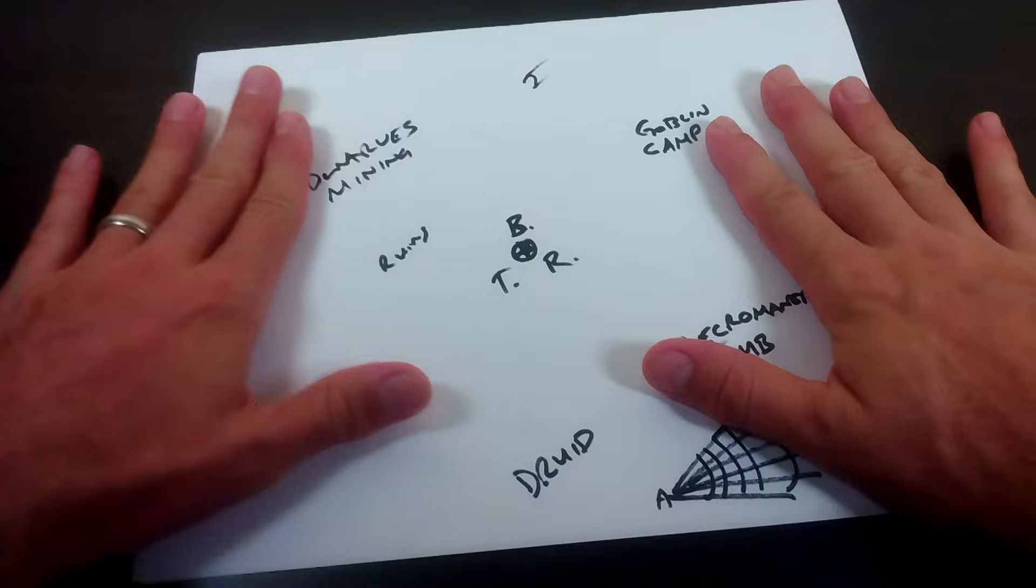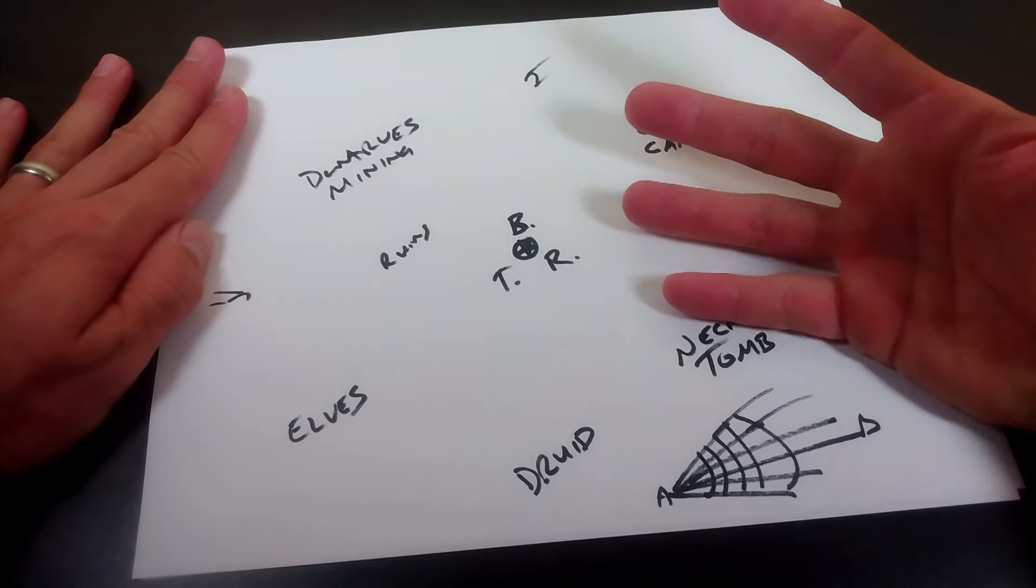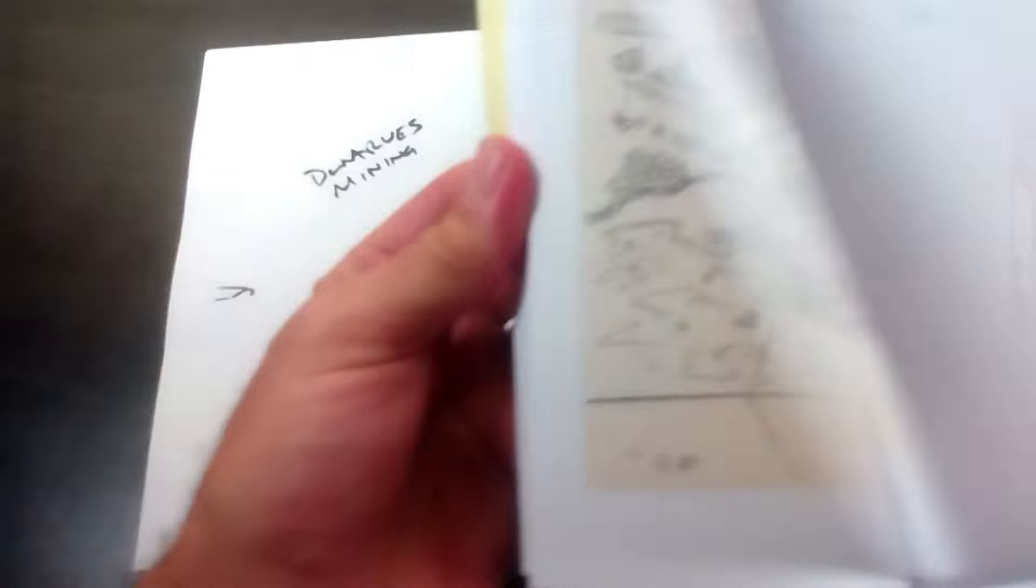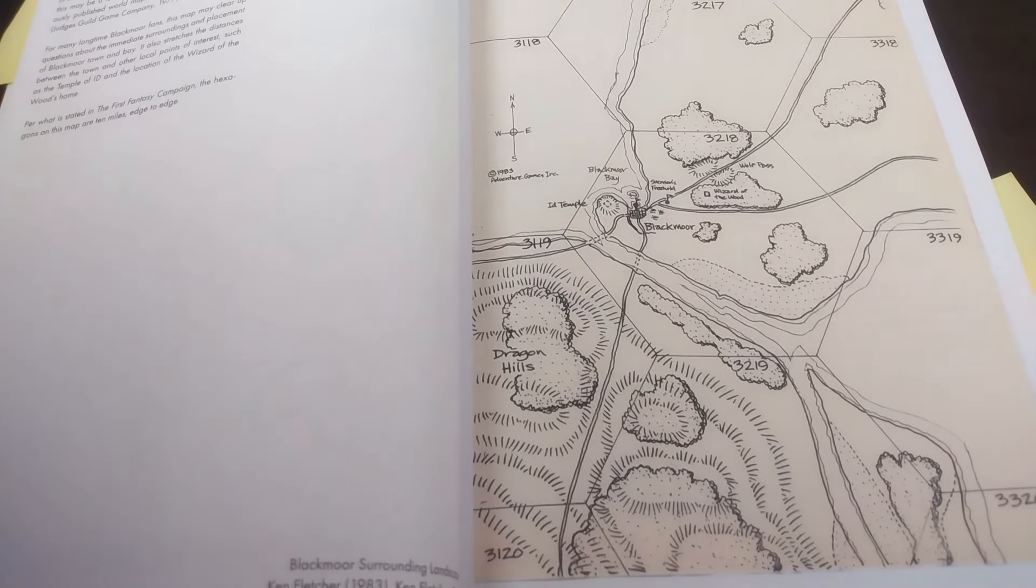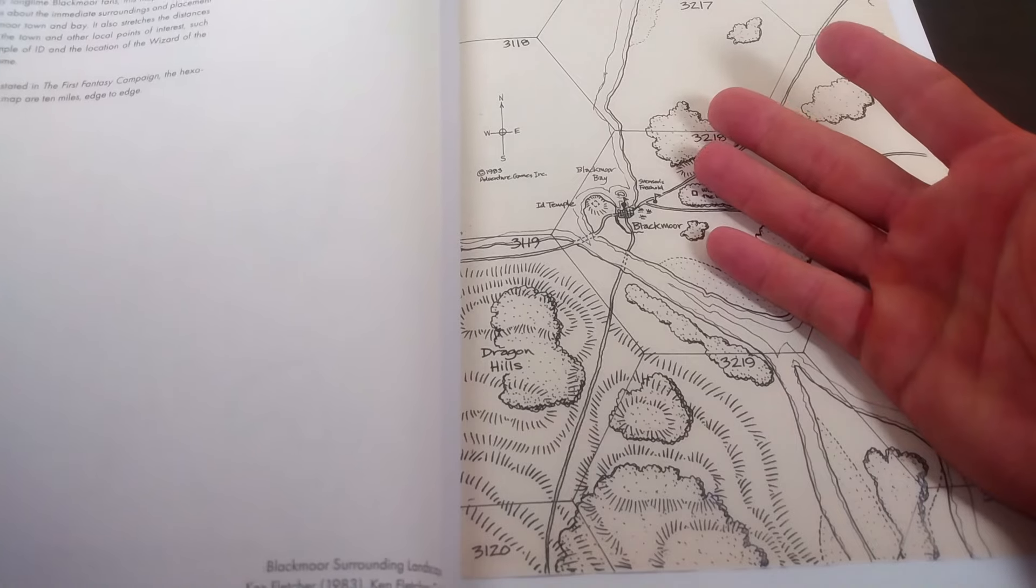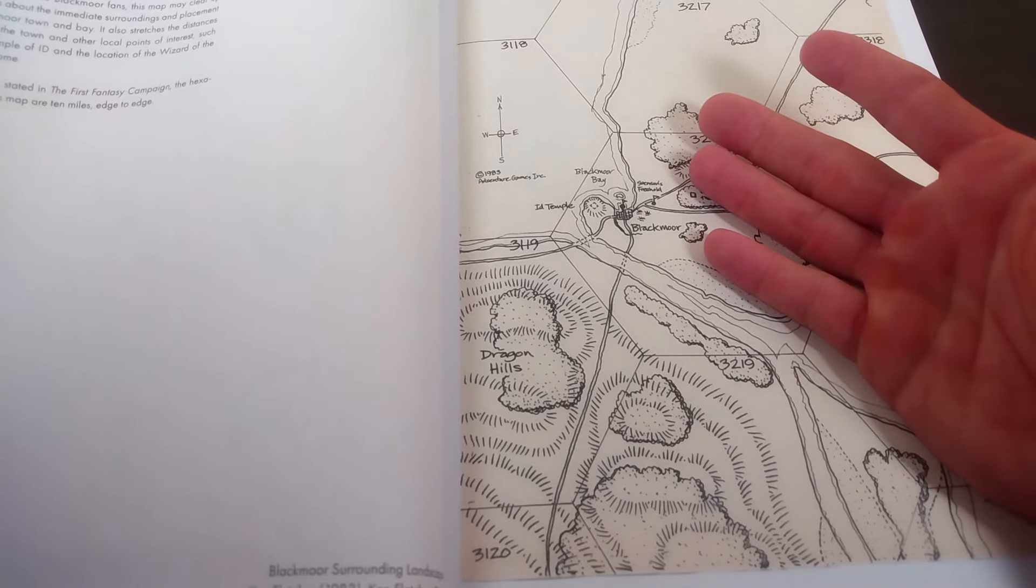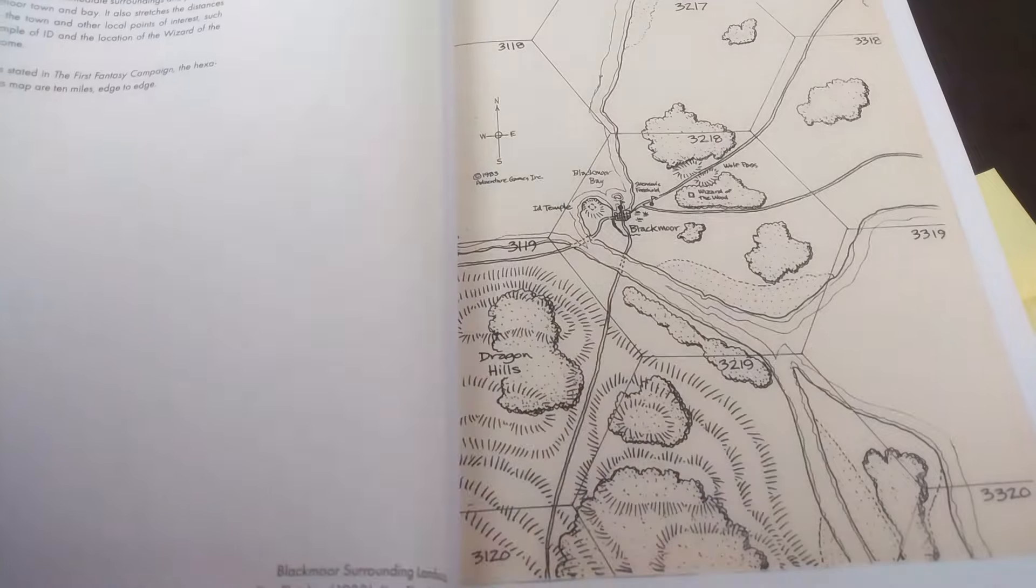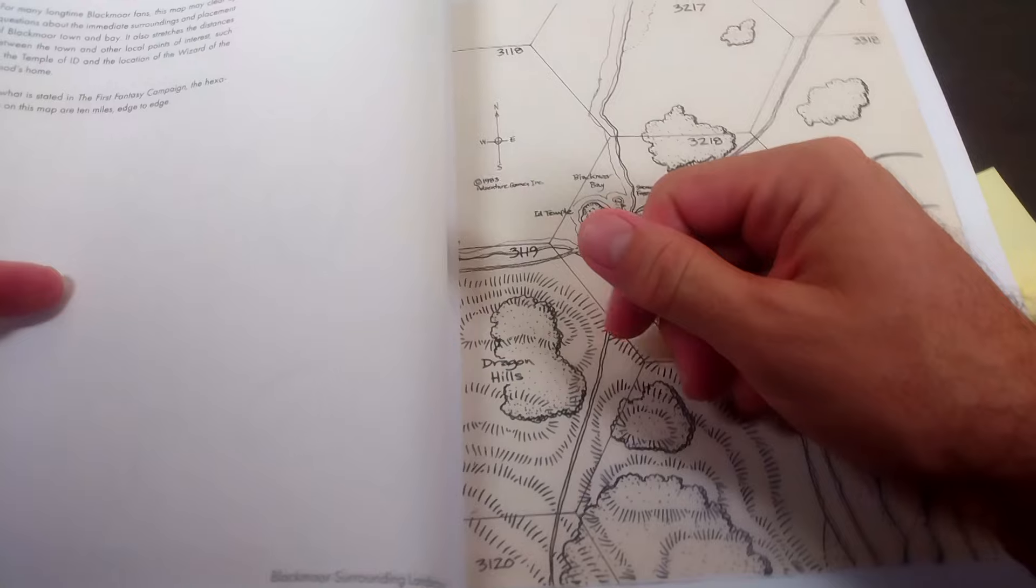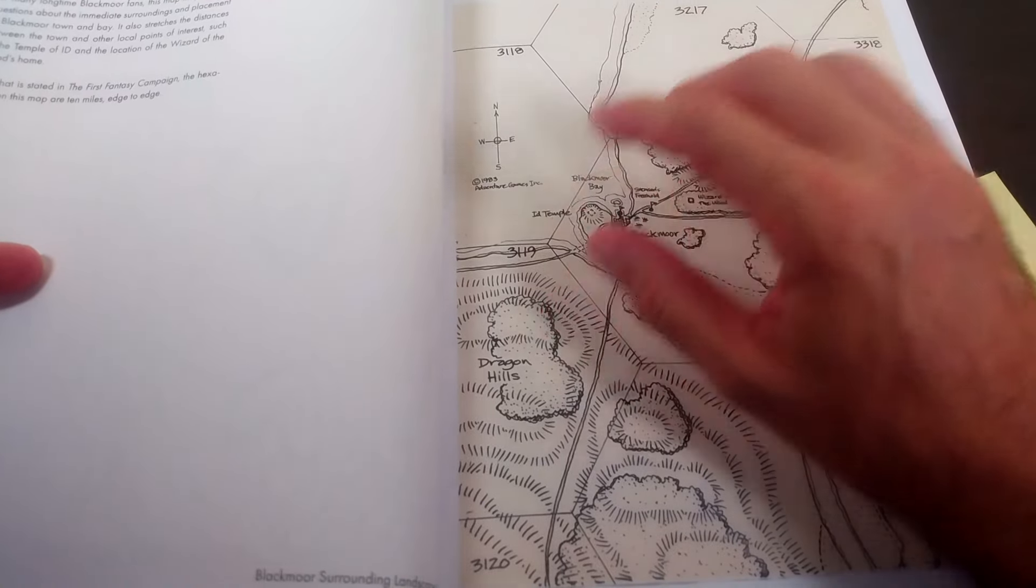I think you see where this is going now. I keep using the term Braunstein because it very closely mimics the style. I should probably be saying Brownstone because from everything I've seen the second ever Braunstein that was run was a Wild West. Dave Arneson played a guy - I just found out about this in this book Blackmoor Foundations - that he, Arneson, was playing a guy named El Poncho who was kind of a reskinned version of Poncho Villa.